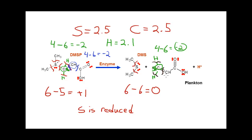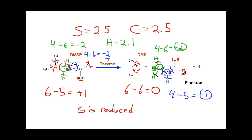Now let's look at this same carbon after the reaction. Applying the bond cut: the electrons in the double bond are distributed equally, the two electrons from the one carbon-hydrogen bond are assigned to the carbon, and the carbon-carbon single bond electrons are cut equally. This carbon now ends up with 5 electrons, giving 4 minus 5, or a minus 1 oxidation state. So this carbon formally went from minus 2 to minus 1.